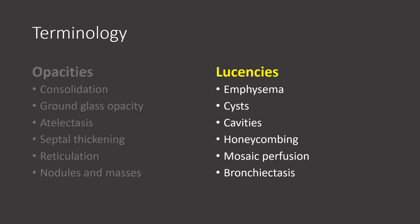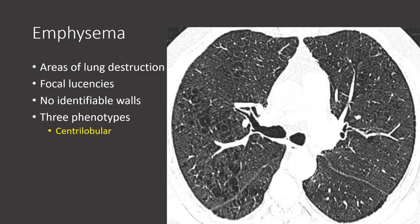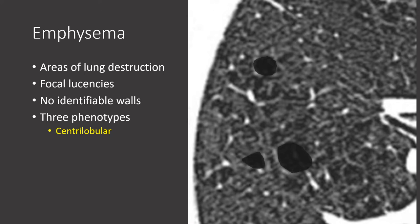Let's now move on to lucencies. The lucencies we'll be focusing on are emphysema, cysts, and cavities. Emphysema represents areas of focal lung destruction, so the lucencies they create will not have identifiable walls. On the right-hand CT image, we see areas of focal lung lucency manifesting as small holes within the lung without identifiable walls. This is central lobular emphysema, typically greatest in the upper lung zones and related to smoking.